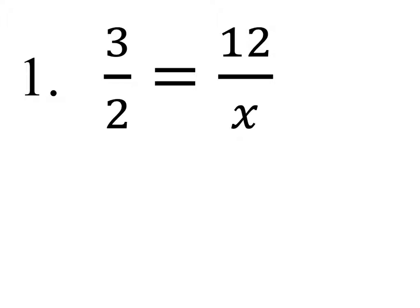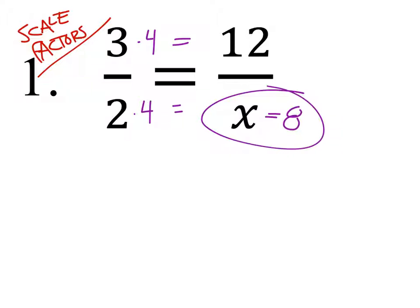All right, now this one actually may be easier using scale factors, which is the method we've been using so far. See, all this means is we multiply the three by four to get 12, right? So we multiply two by four to get the x. So x is eight. And then we've solved it.